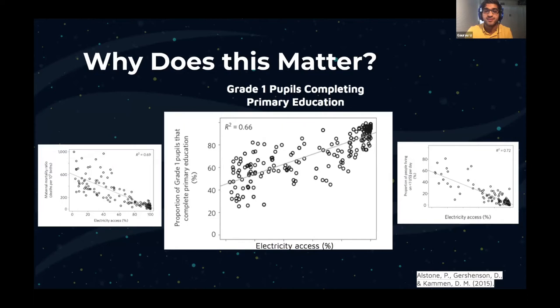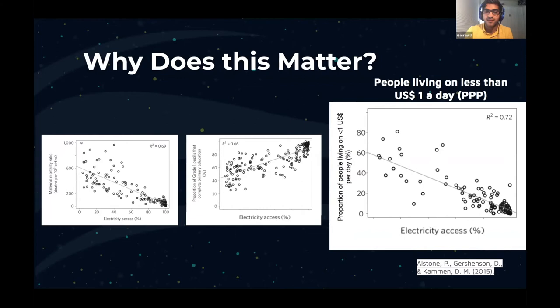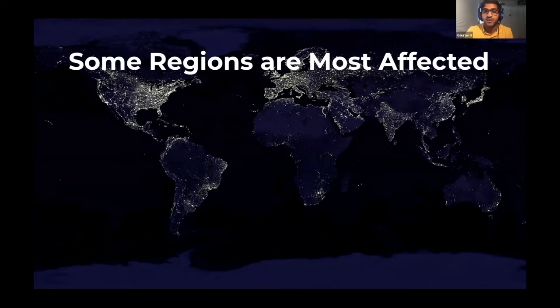Energy access is deeply tied to economic development. The number of people living on less than $1 a day goes down as energy access goes up. Electricity is an essential cog in the wheel of progress. When we look at the globe, some regions are most affected. In fact, 87% of people without electricity live in rural regions. For example, in sub-Saharan Africa, urban areas have 75% electrification while rural areas have only 25%.